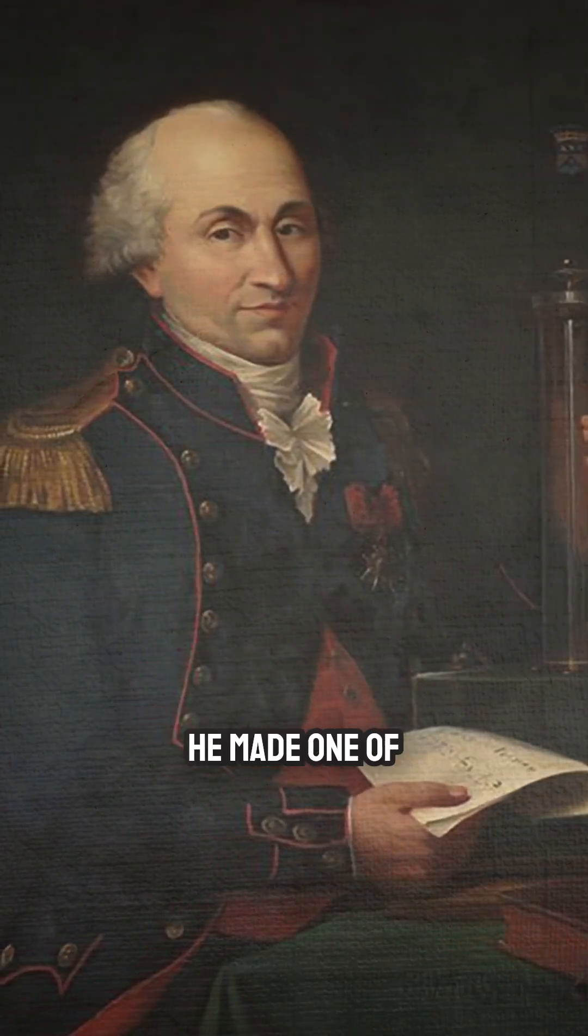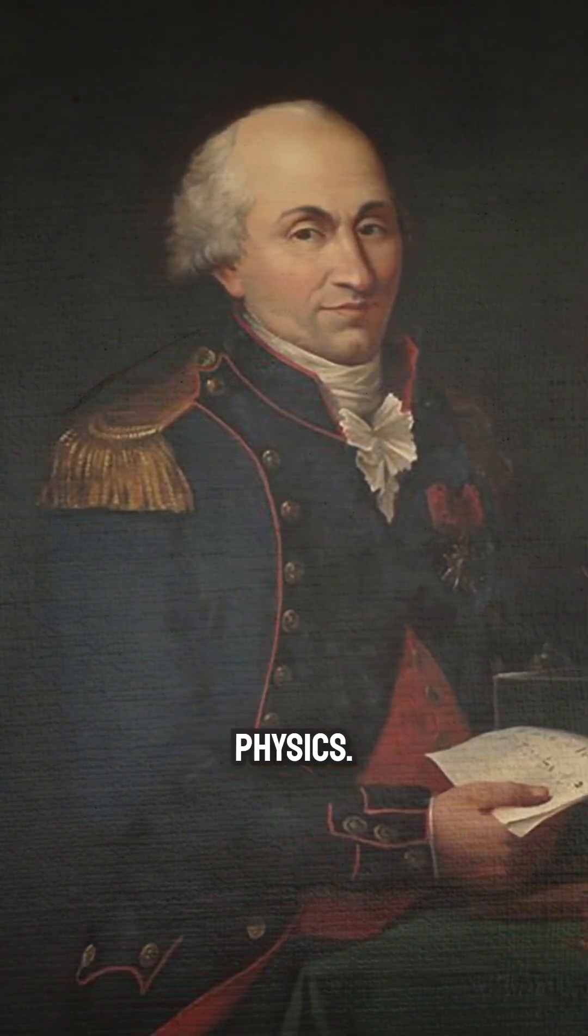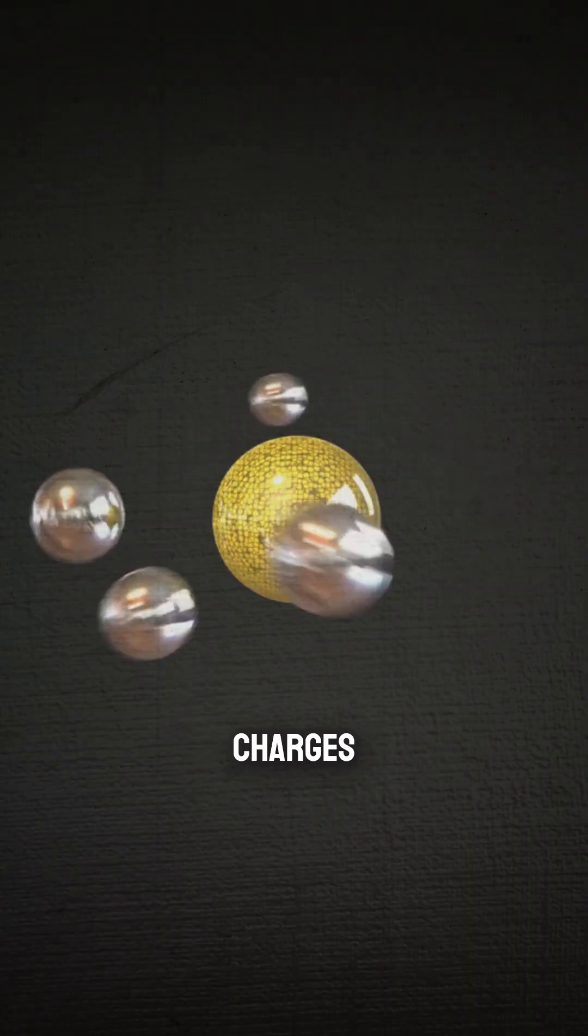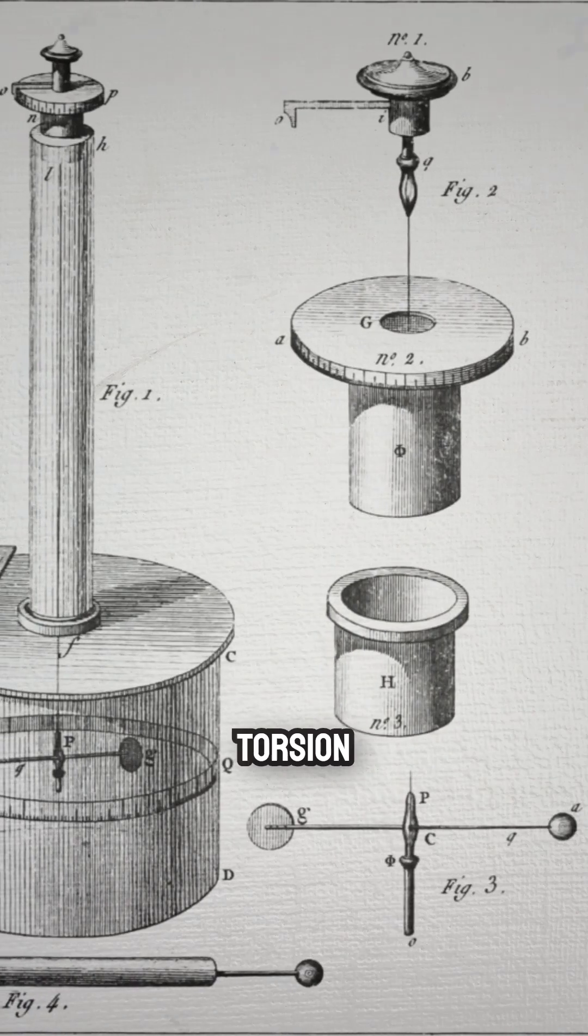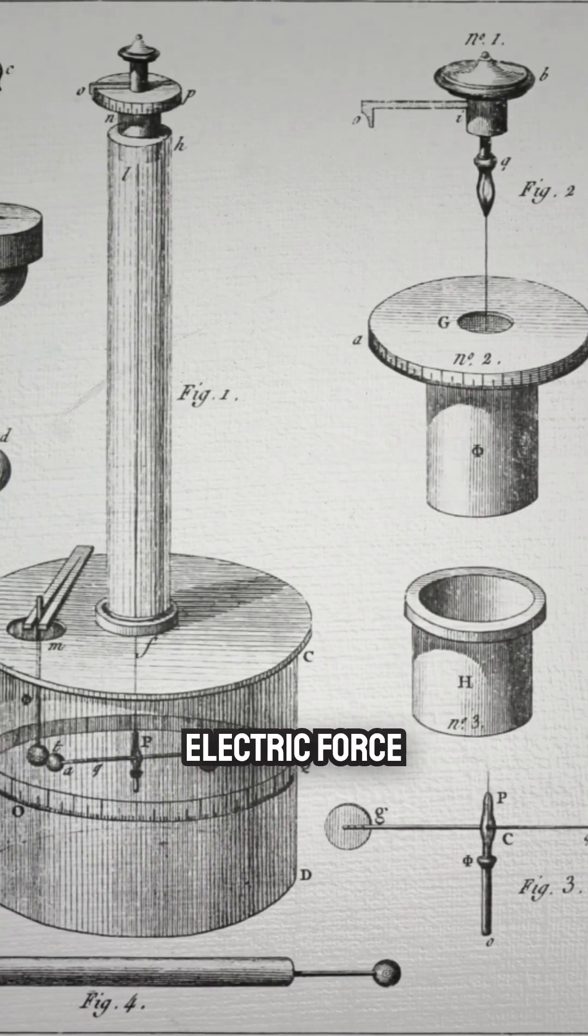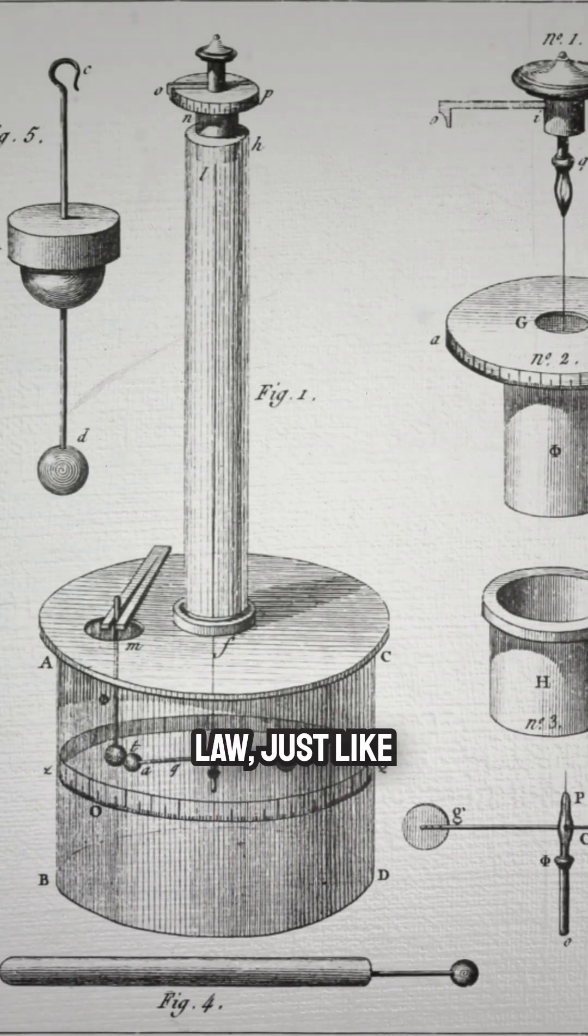In the 1780s, he made one of the most important discoveries in physics. He figured out how electric charges attract and repel each other. Using a torsion balance, he proved that electric force follows an inverse square law, just like gravity.